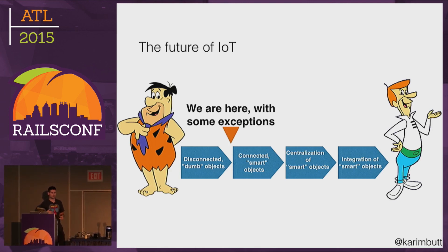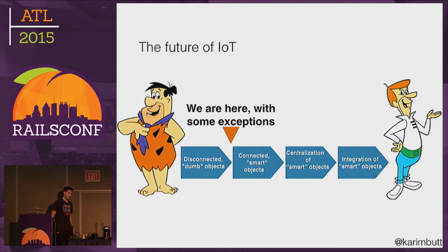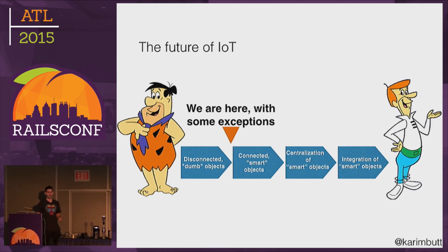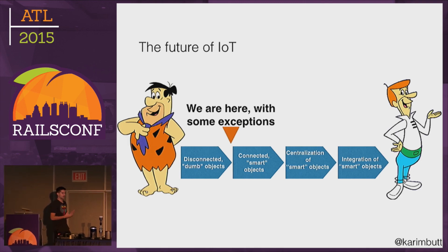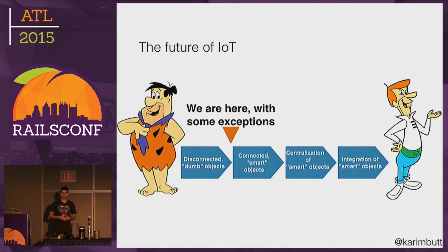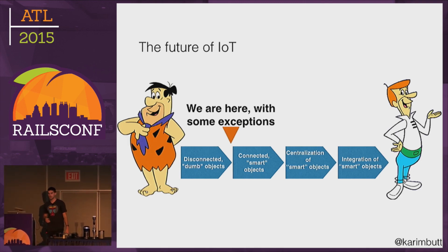But I think the ultimate step and where we really want to end up with IoT is where we're actually integrating all of these — where all these smart objects are working with one another regardless of brand or what they actually do. They're working together in these routines. You can imagine coming home late from work and your home almost knows that — it starts heating up the food when you're close enough, the lights turn on when you walk in, the doors unlock, everything works together seamlessly.